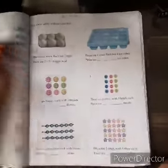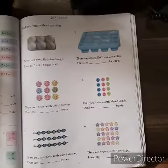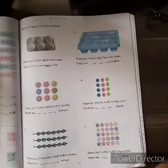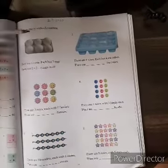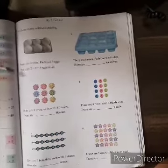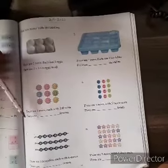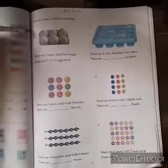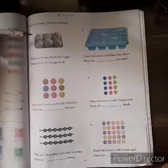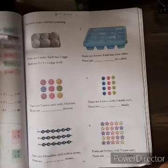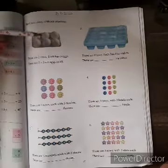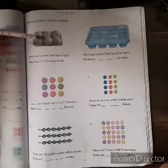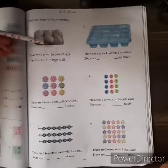Now we will do some sums without calculating. That means without counting, we will find how many things are there. See the first one, eggs. We will not count them one, two, three, four, five, six. We will not count like that. What will we do?